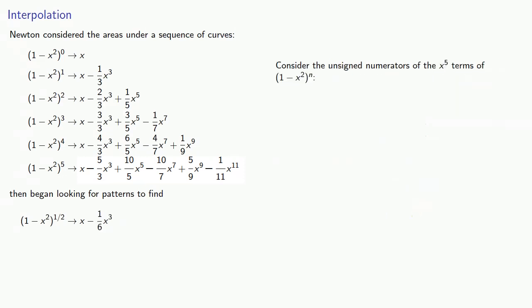Now let's look at the unsigned numerators of the x^5 terms of our expansions. So if our exponent is 0 or 1, the x^5 term has coefficient 0. If n equals 2, the coefficient has numerator 1. And for 3, 4, and 5, the coefficients are 3, 6, and 10.